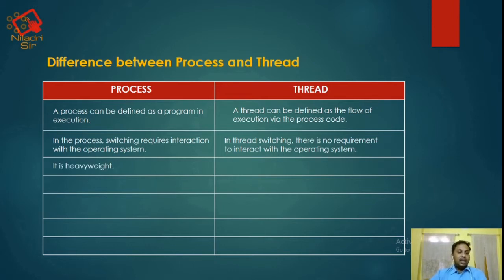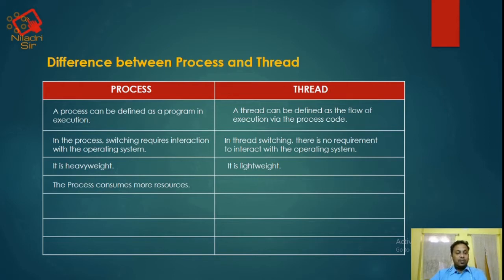A process is heavyweight, while a thread is a lightweight process. A process consumes more resources, but a thread consumes fewer resources.